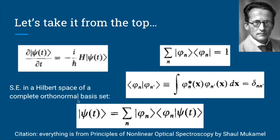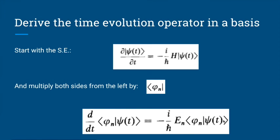If we want to express any wave function psi of t in that basis set, we find the overlap of our wave function onto the particular basis function n, multiplied by the outer product. We've multiplied only one side by the identity — that's something you do all the time in quantum mechanics: insert the identity. This is useful because we've expressed our wave function psi of t in terms of its basis set functions.